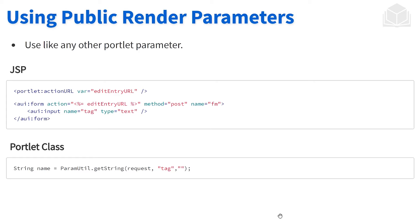So how do we use these public render parameters? On the JSP side, we will have an Alloy UI form, an input, and then we see the name equals tag. In the portlet class, using the ParamUtil helper class, we're going to get from the request object that tag string. For the most part, it's like any other parameter used within the render phase, the action phase, and so on. The only difference is that we declare that specific parameter as a public render parameter.